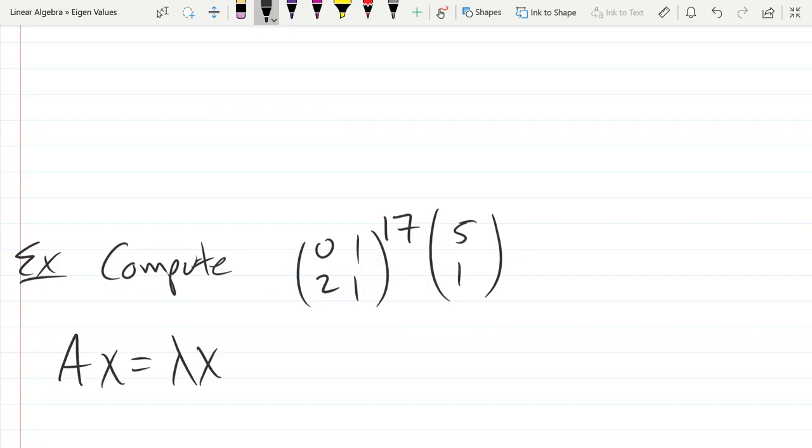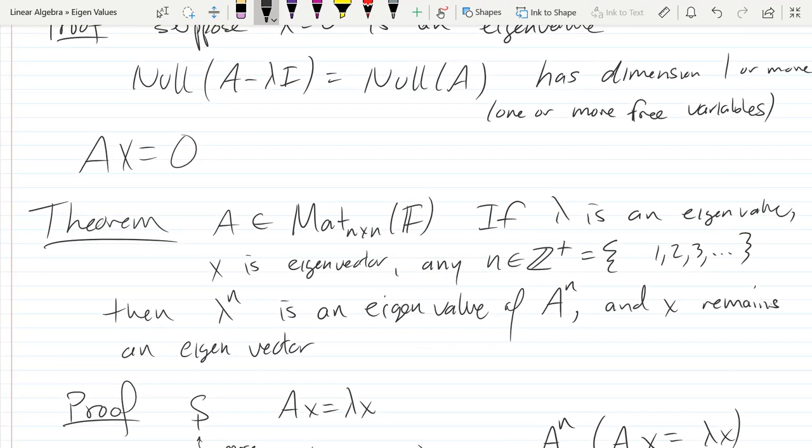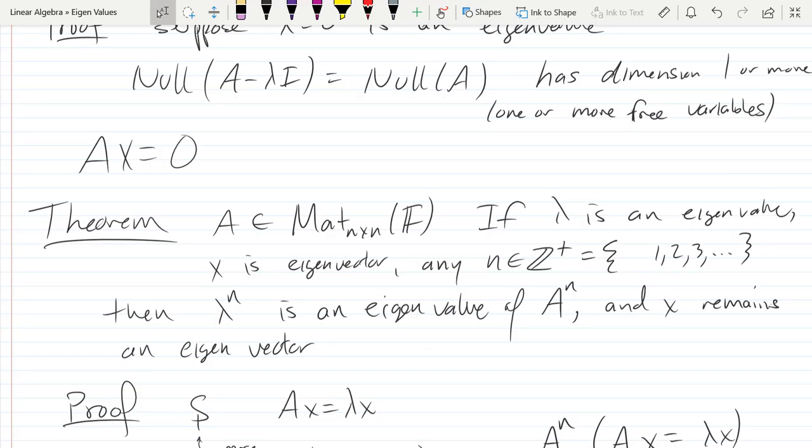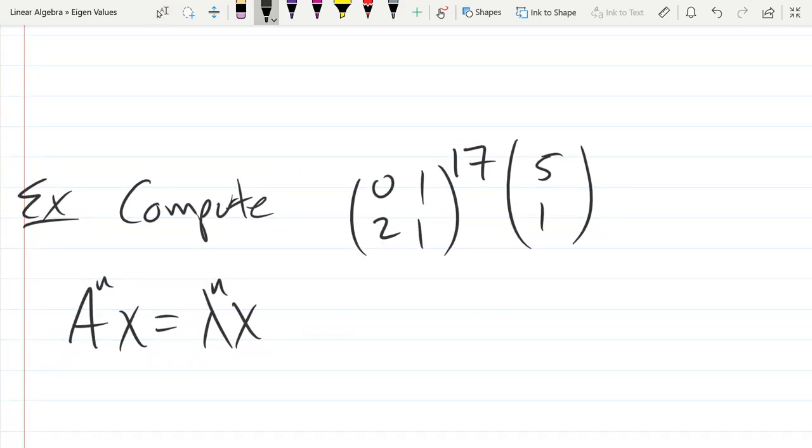So I wrote the conclusion of the theorem, the conclusion you put to the nth power. What is the hypothesis? Somewhere up here. We need a square matrix, which we have a two by two, so that's good. Only is true when lambda is an eigenvalue and x is an eigenvector. This theorem is only going to apply if this vector here is an eigenvector of our matrix. How can we find the eigenvalue? Well, this better be an eigenvector. Hopefully it is. How would I find the eigenvalue?